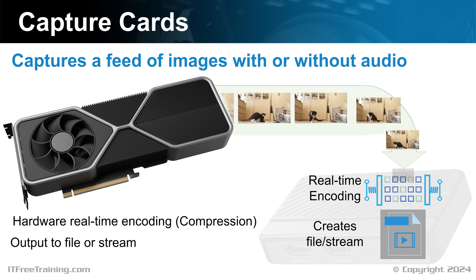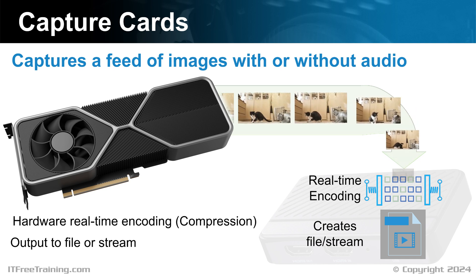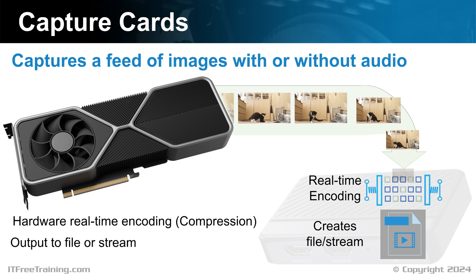Once the video is compressed, it is generally sent to a file or to a stream. A file is simply saved to local storage. It is generally not recommended to save the file over the network, as if the network has performance problems, this may cause frames to be lost. If you output the data to a stream, this is essentially sending it somewhere else — nowadays, this often means an online streaming service which will broadcast it to others on the internet.